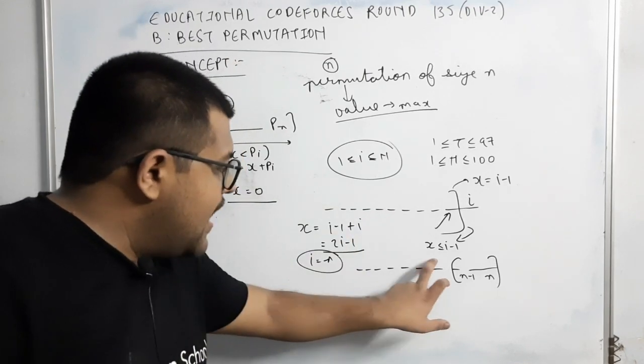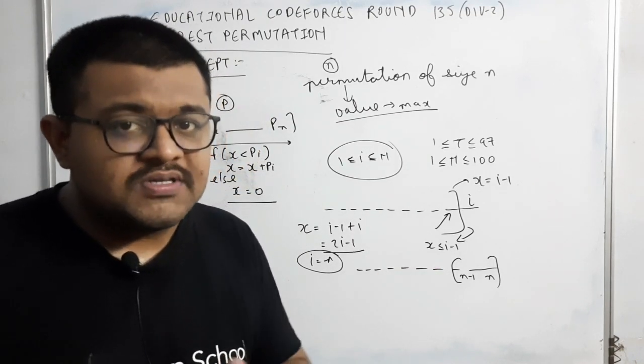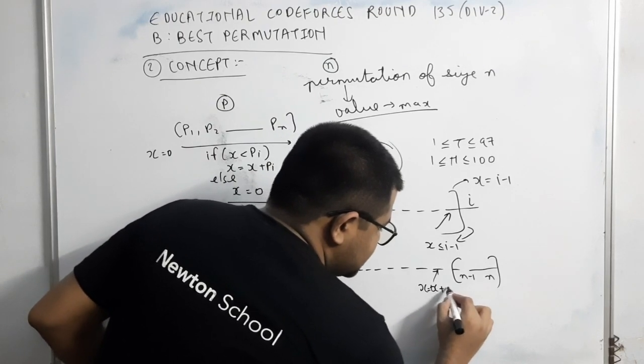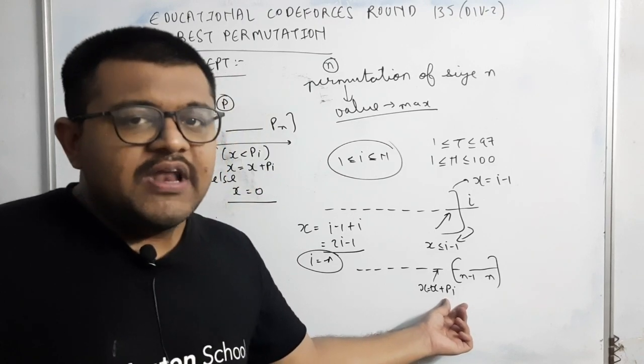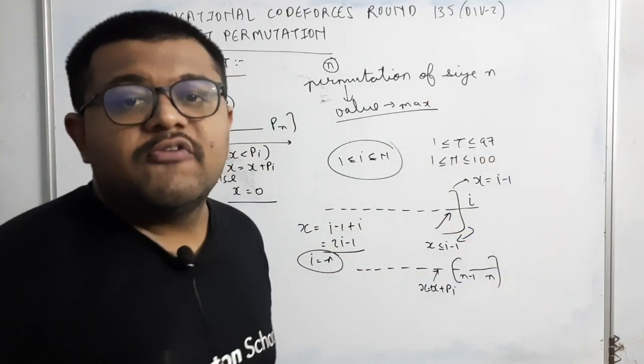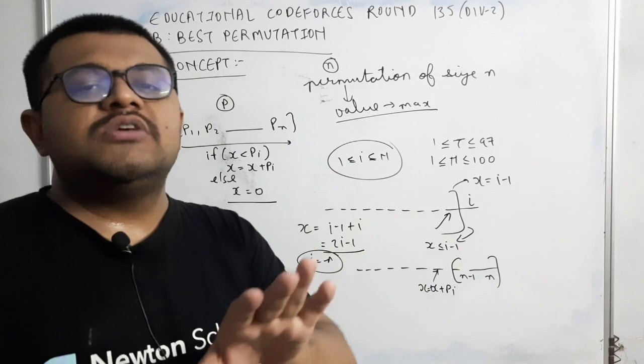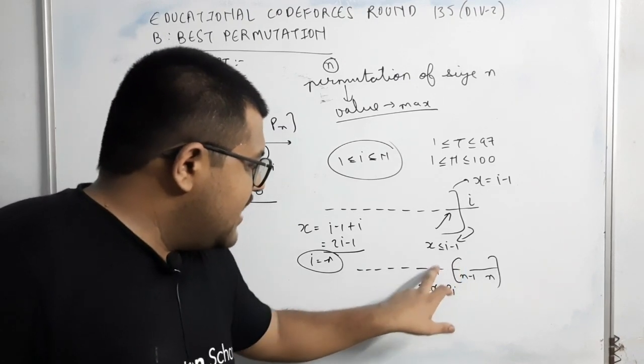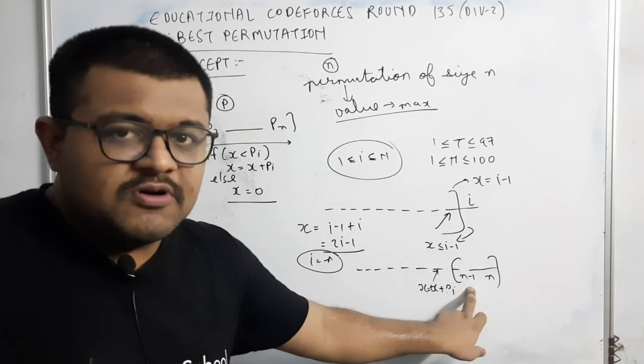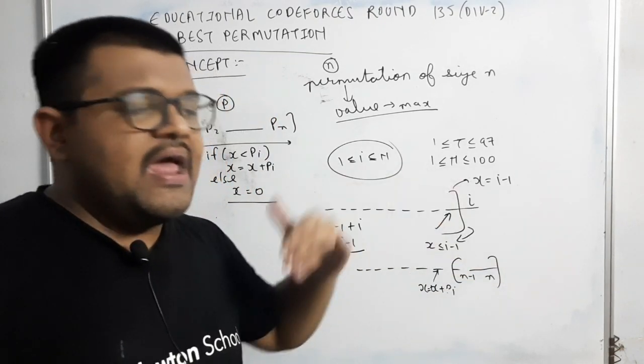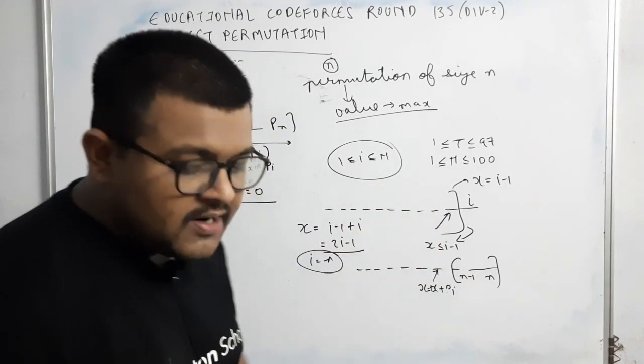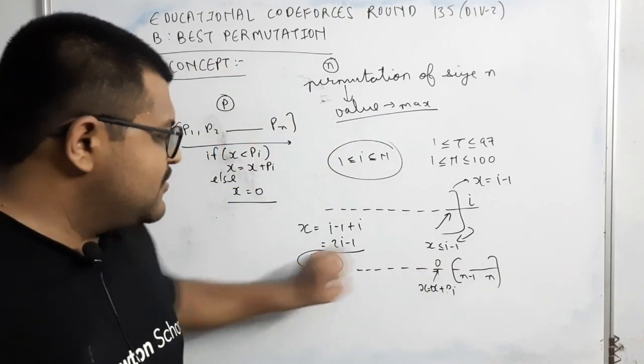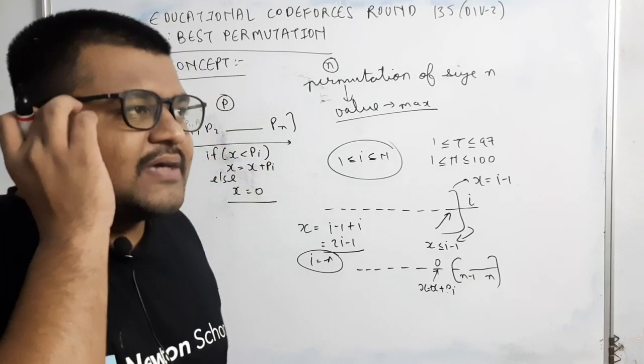So now, हमें यह clear हो गया है कि out of the n elements, last two position पे n minus 1 or n आएगा. अब एक बात समझो. हमने क्या define किया है? That the maximum value of x can be 2n minus 1. यह हमने अभी तक derive कर लिया है. But for that to happen, यहां पे जो x की value होनी चाहिए, यह वो zero हो जानी चाहिए at n minus 2 position. समझ रहे हो? Why? Because यहां पे मानलो, अगर यह जो position पे value है, वो मानलो, मैंने x में add कर दी. x is equal to x plus pi. तो अब क्या होगा. This pi is between 1 and n minus 2. That pi plus n minus 1 would be greater than or equal to n. तो last value add नहीं होगी. x की value 0 हो जाएगी. So, in order to add these two elements, यहां पे x की value 0 हो जानी चाहिए.